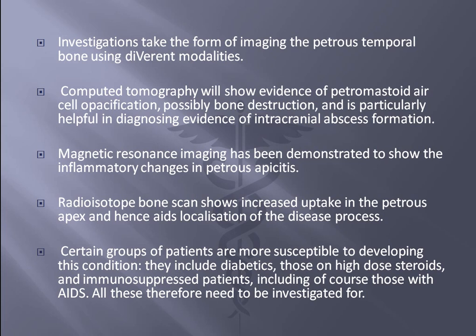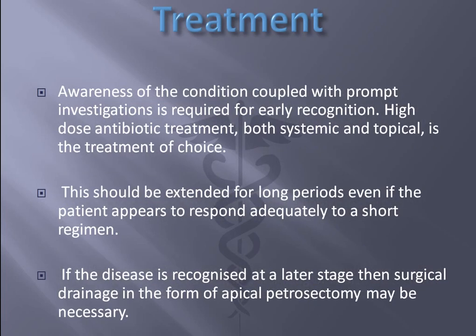Certain groups of patients are more susceptible to developing this condition, including diabetics, those on high-dose steroids, and immunosuppressed patients including those with AIDS — these therefore need to be investigated. Treatment requires awareness of the condition coupled with prompt investigations for early recognition. High-dose antibiotic treatment, both systemic and topical, is the treatment of choice and should be extended for a long period even if the patient appears to respond adequately to a short course. If the disease is recognized at a later stage, surgical drainage in the form of apical petrosectomy may be necessary.